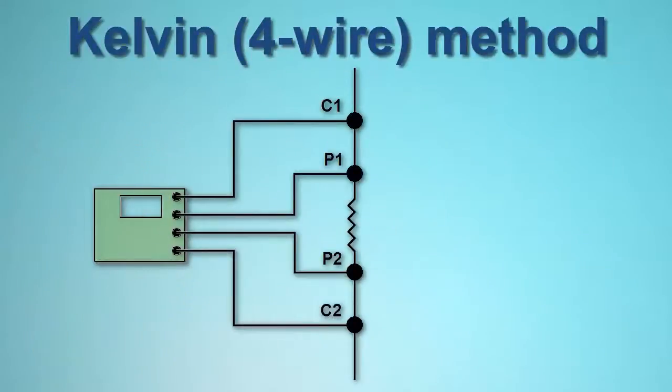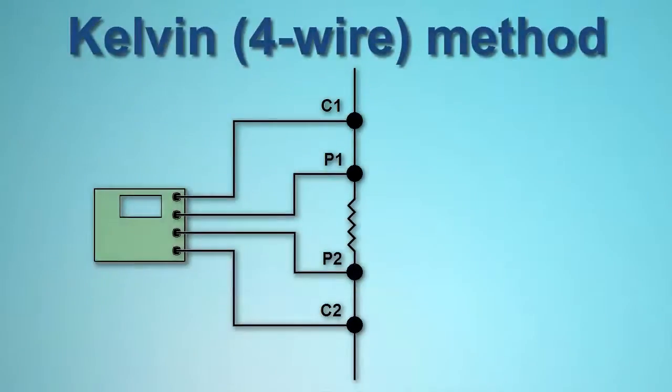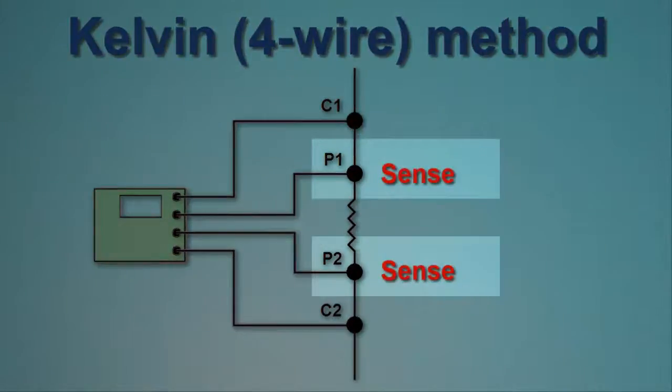Kelvin testing uses two separate pairs of leads. One pair, called the source leads, provide a known quantity of constant current. The second pair, called the sense leads, measures voltage.